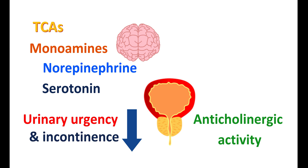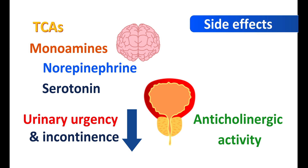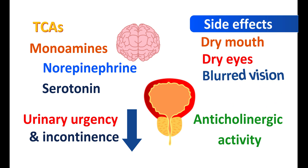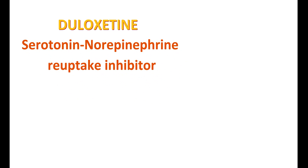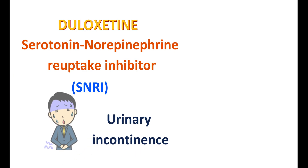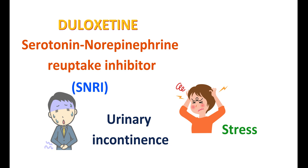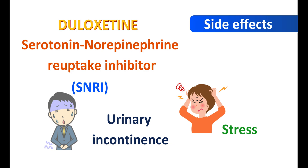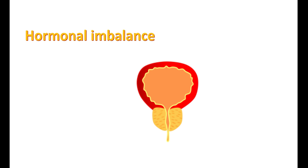Since TCAs block the actions of acetylcholine, they produce side effects similar to those of anticholinergics — dry mouth, dry eyes, blurred vision, and constipation. Duloxetine is a serotonin-norepinephrine reuptake inhibitor (SNRI) that can be used to reduce urinary incontinence often associated with stress. Many of these antidepressants are not FDA-approved for treating overactive bladder but are used off-label for urinary problems. The side effects of duloxetine are similar to those of TCAs; in addition, it can cause fatigue and insomnia.